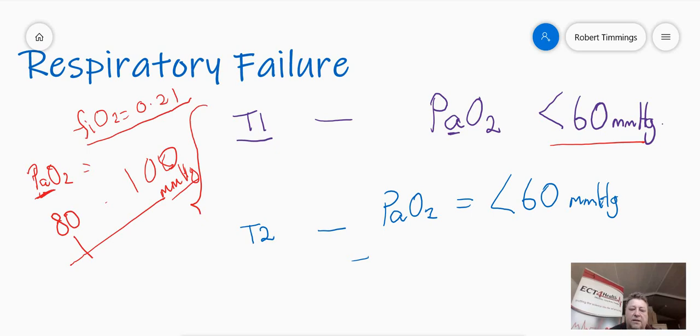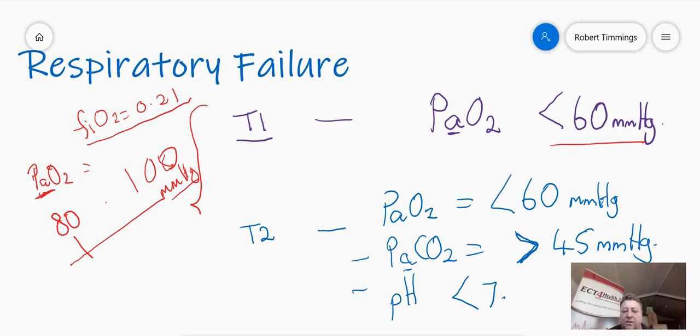But two other criteria. I must also have a CO2, a PaCO2, a carbon dioxide level that is greater than 45 millimetres of mercury. Up to 45 is normal. Greater than 45 with carbon dioxide, too much carbon dioxide in my arterial blood. And the pH of my blood, my arterial pH, must be less than 7.35, where a normal value is 7.35 to 7.45.